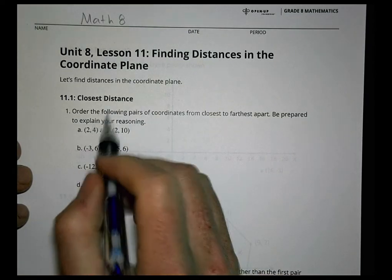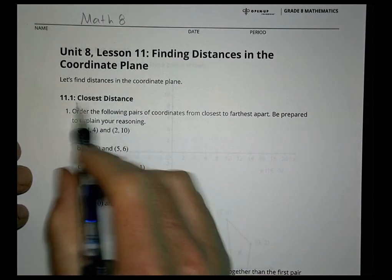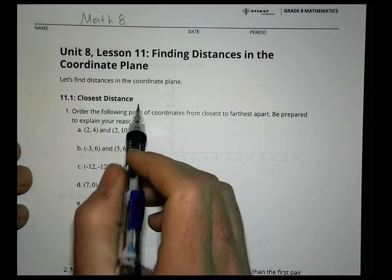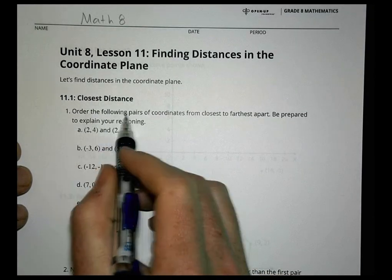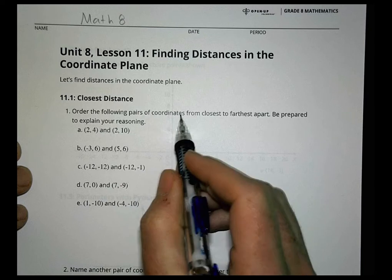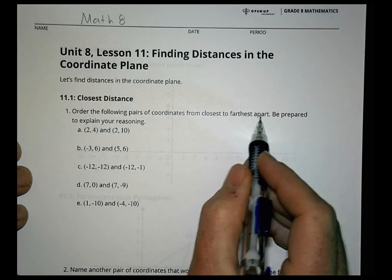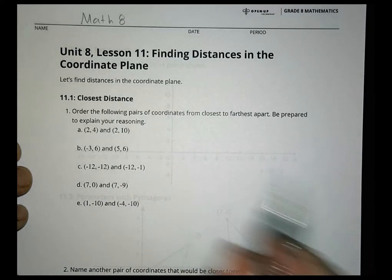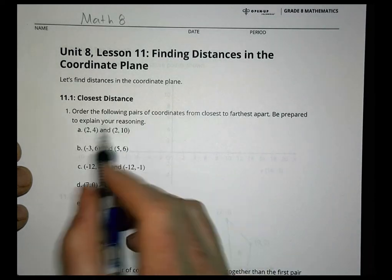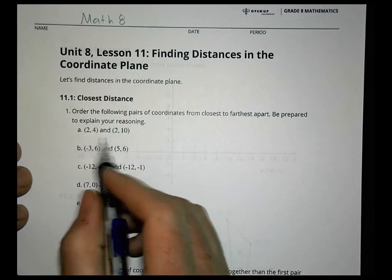For Activity 1, 'Closest Distance,' order the following pairs of coordinates from closest to farthest apart, and be prepared to explain your reasoning.